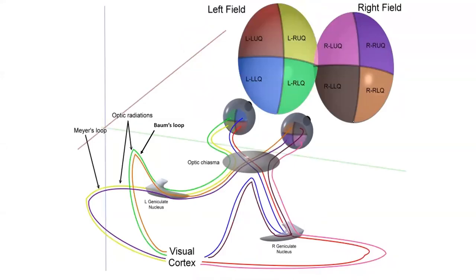Taking it a step further, we can look at this exact same setup in a more three-dimensional way. We still see the familiar structures — our visual field out in front, our eyes, then our optic nerve heading back to our optic chiasm. We can see the separate fibers so we can better understand what's happening with the image, and then from our optic chiasm we go back through our optic tracts on each side to our lateral geniculate nuclei on each side.